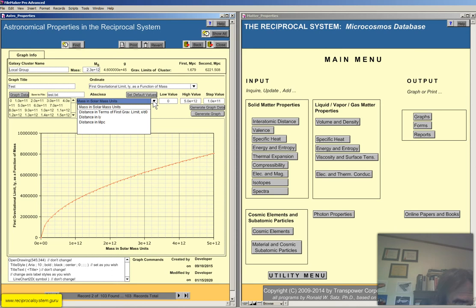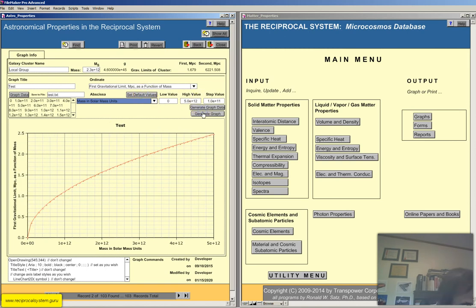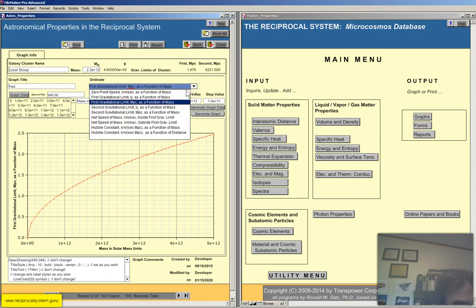So here's the first gravitational limit in light years. Again, you can see what that looks like. The rest of these you don't really need that. So let's do first gravitational limit in megaparsecs as a function of mass. So there's the mass, set default values, generate the graph data. So now we have megaparsecs, which is probably a better unit to use for this. First gravitational limit as a function of mass, right about here, 1.5 megaparsecs for the local group.